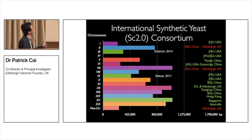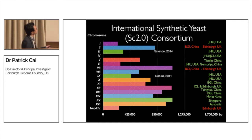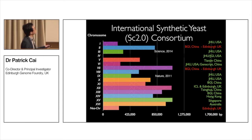This is a snapshot of the consortium I coordinate — the Synthetic Yeast Consortium. Yeast has 16 chromosomes of different sizes; the small ones are chromosomes 1 and 3, and the big ones are chromosomes 4 and 7. My group collaborates with BGI to synthesize chromosome 2, and we have a 770 kb chromosome 7 which is about a million base pairs.